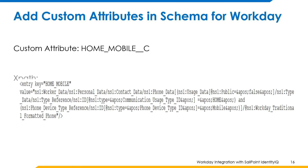Add custom attributes in schema for Workday. To add any custom attribute in Workday, it needs to be mentioned in the schema with the suffix of double underscore c (__c), and the respective XPath has to be added in the backend. The Workday application team needs to provide the XPath. Here is a custom attribute that needs to be added in the Workday schema, and the respective XPath will be given by the Workday team.